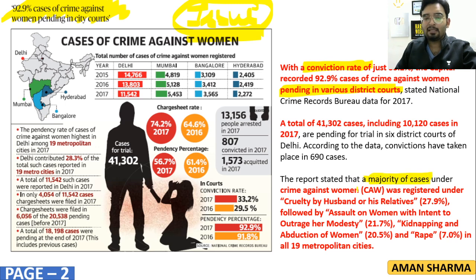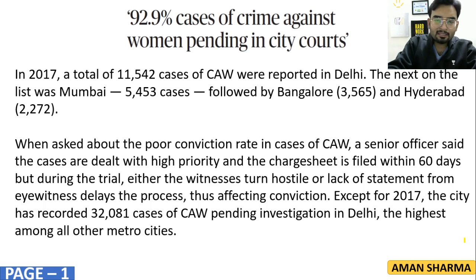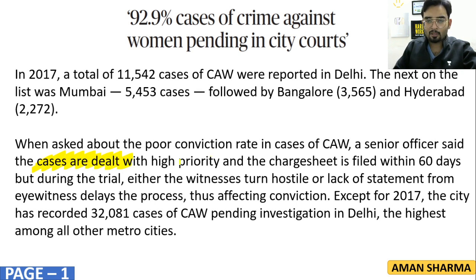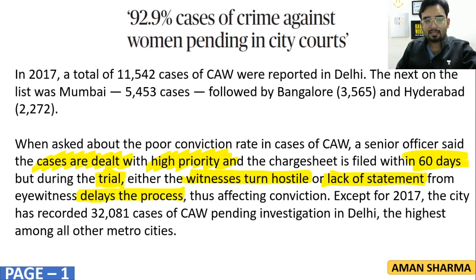The majority of pending cases of crime against women involve cruelty by husband or his relatives, assault on women with intent to outrage her modesty, and kidnapping and abduction of women. Although these cases are dealt with very high priority — charge sheets are filed within 7 days — the trial process gets delayed because witnesses turn hostile, there are gaps in statements, and there is a shortage of witnesses.